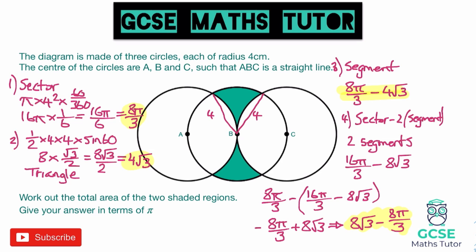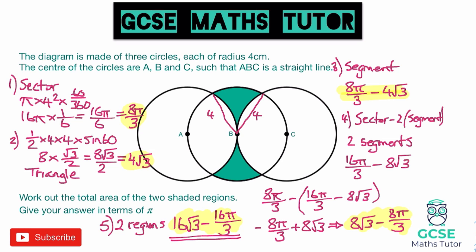Step 5: we have two shaded regions, so multiply by 2. 8√3 × 2 = 16√3, and 8π/3 × 2 = 16π/3. So the total area of the two shaded regions is 16√3 − 16π/3. We can write this as 16√3 − (16/3)π, giving our answer in terms of pi.